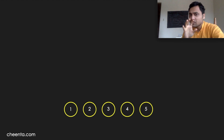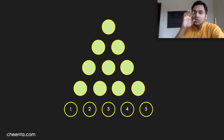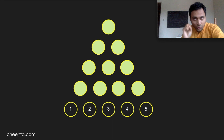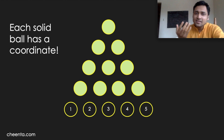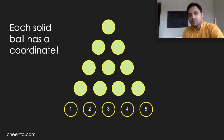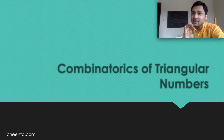Suppose we have five empty balls, numbered 1, 2, 3, 4, and 5. On top of that, we have stacked 10 solid balls. Each of these solid balls can be naturally assigned a coordinate using the last row of numbers. And that is, in some sense, the secret of the combinatorics of triangular numbers.